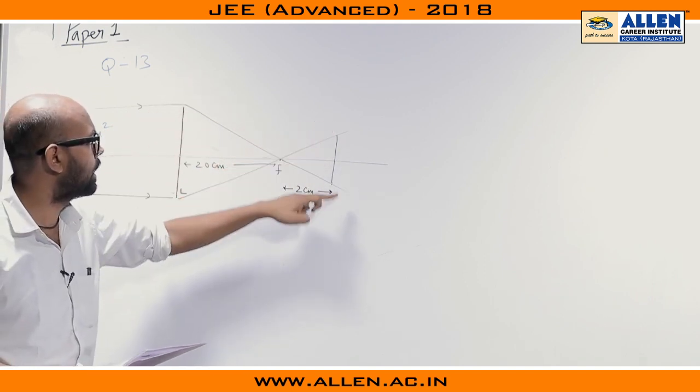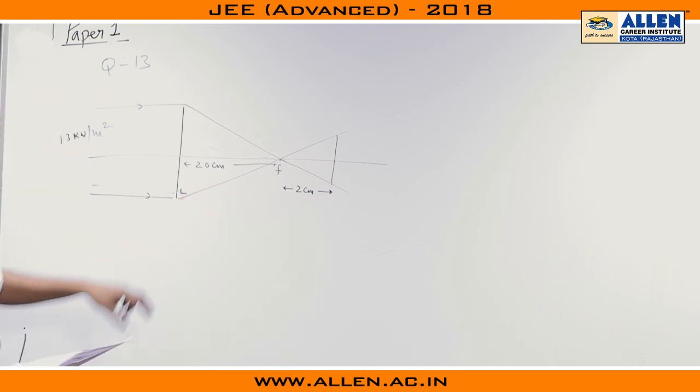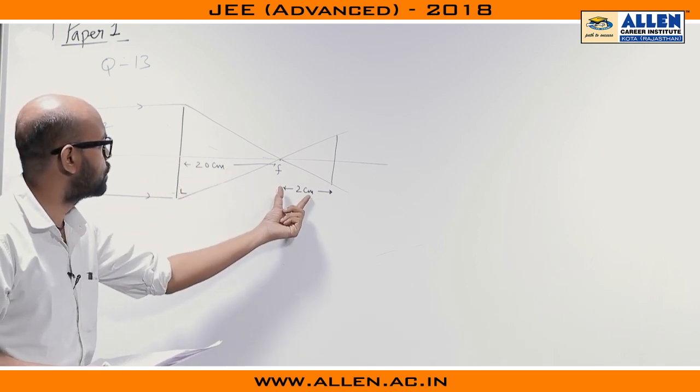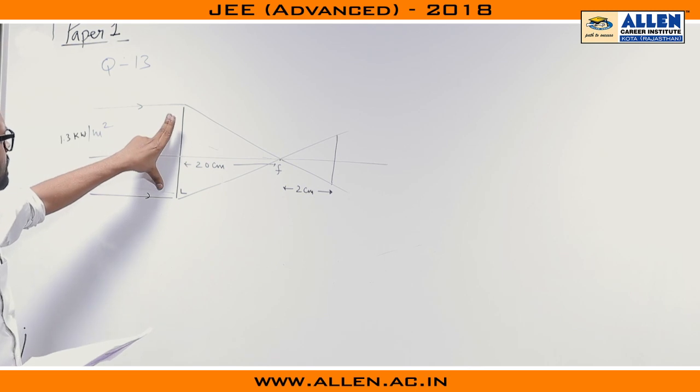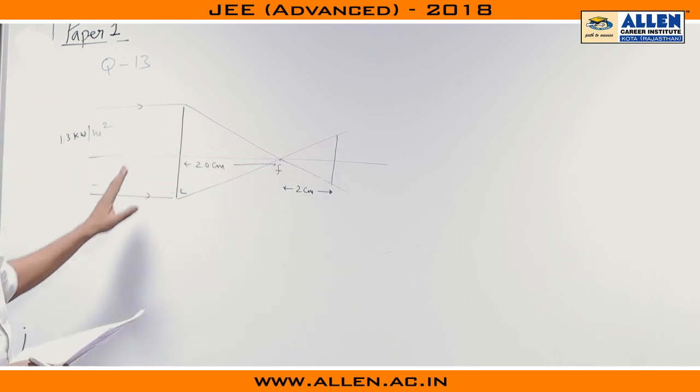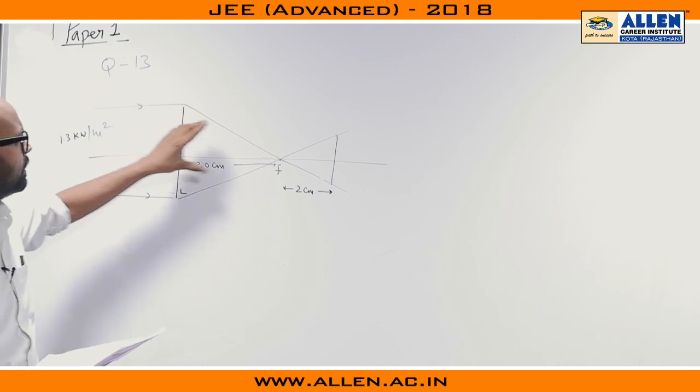If you see this triangle and this triangle, these two triangles are similar. So if this side is 20, this side is 2, the diameter of this lens and this length will have a ratio 1 is to 10. It means this is a 10 part, this is 1 part.